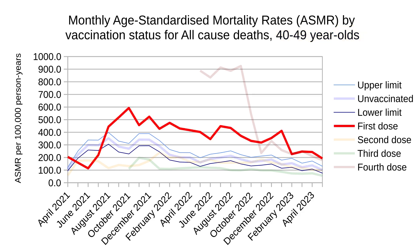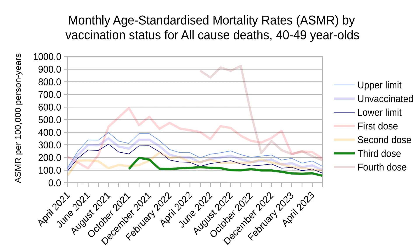First-dose individuals have a significantly higher mortality than the control group. Those who took a second dose start out having less mortality than the control, but from 2022 onwards have very similar mortality. According to this data, third-dose individuals have less mortality than the control, but again, people in their 40s who took a fourth dose have significantly higher mortality, especially in the first few months of the rollout.